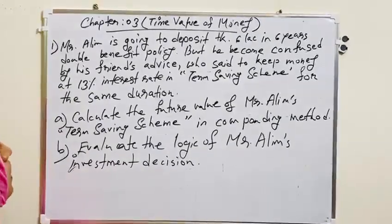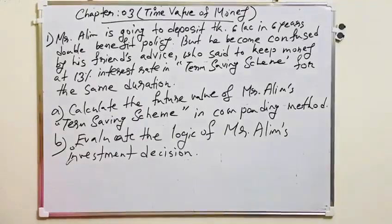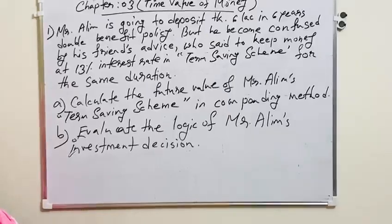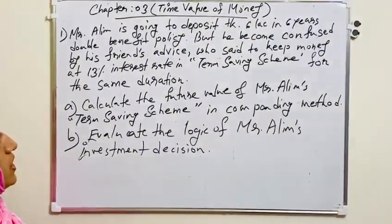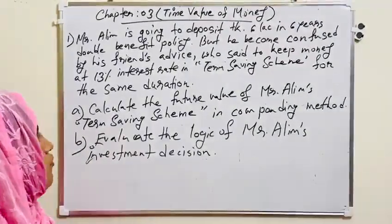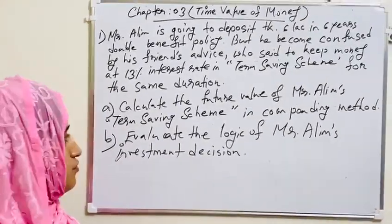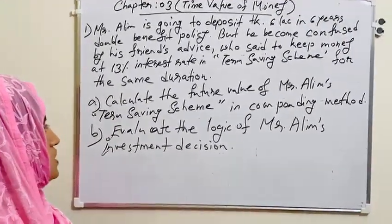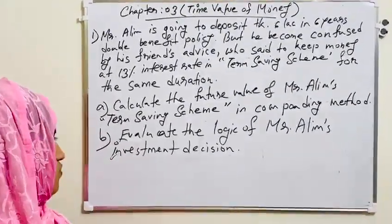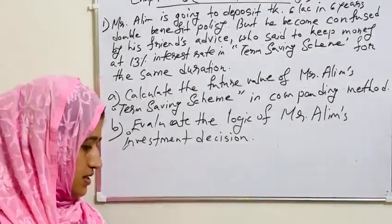Today's first question is from your main book's creative question. Mr. Ali is going to deposit 6 lakh to 6 years double benefit points. But he became confused by his friend's advice, who said to keep money at 13% interest rate in term saving scheme for the same duration.